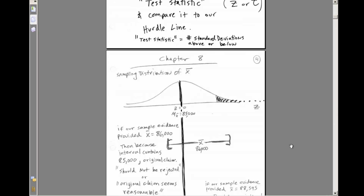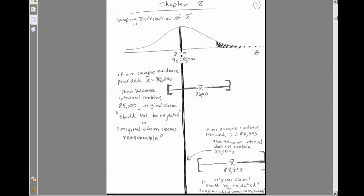Chapter 8 covered confidence intervals, where we ran a risk. If we built a 95% confidence interval, we ran the risk that 5% of our intervals would not contain the population parameter. The textbook peripherally mentions doing hypothesis testing via confidence intervals, but the idea is the same: if we do a 95% confidence interval, we run a 5% risk of making an error.